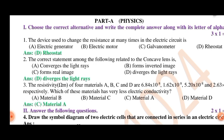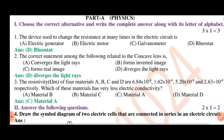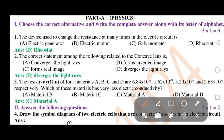Choose the correct alternative and write the complete answer along with its letter of alphabet. What is the device used to change the resistance many times in the electric circuit? Rheostat. Answer D. The correct statement among the following related to the concave lens is: it diverges the light rays. Correct option is D.